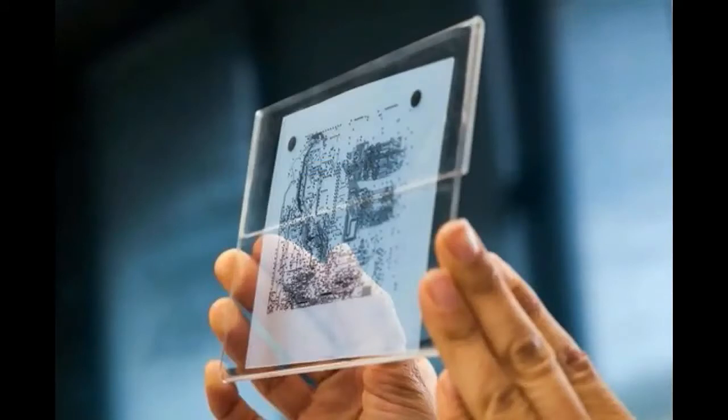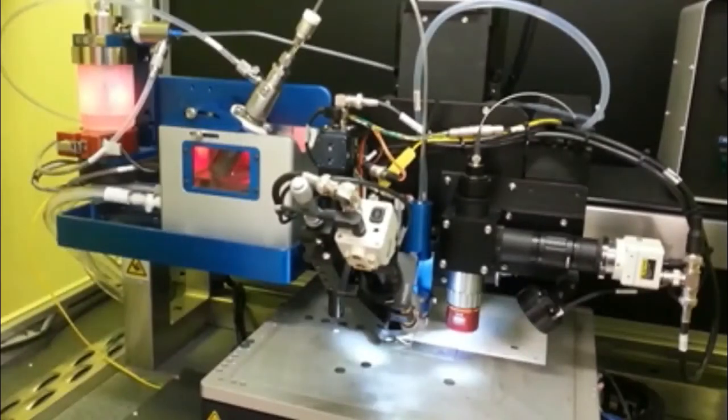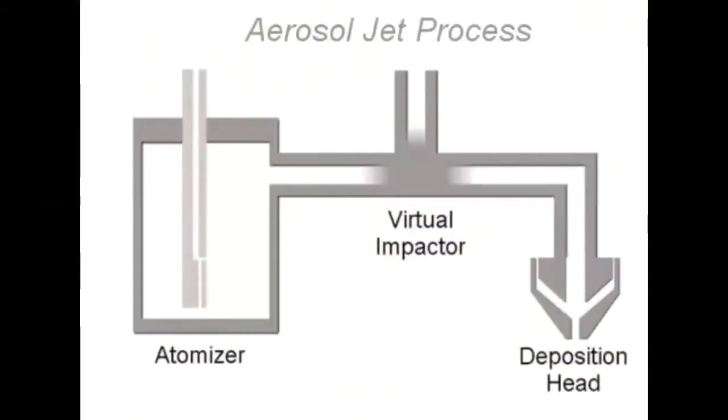When using this printing method, the structure is created in a 3D printing process which is why it is so exciting for the future. A mist of tiny droplets of silver are sprayed and build a structure nanometer by nanometer.